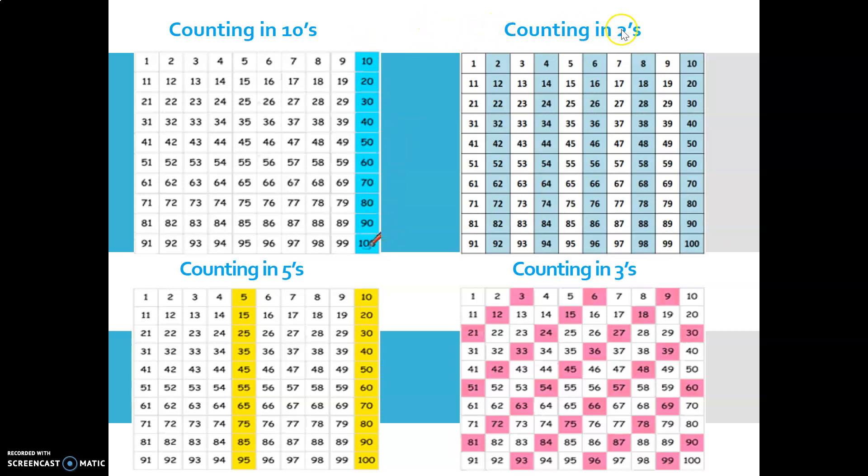And in counting in 2s or your 2 times tables, every second column is highlighted. So 2, 4, 6, 8, 10, giving a lovely stripey pattern.